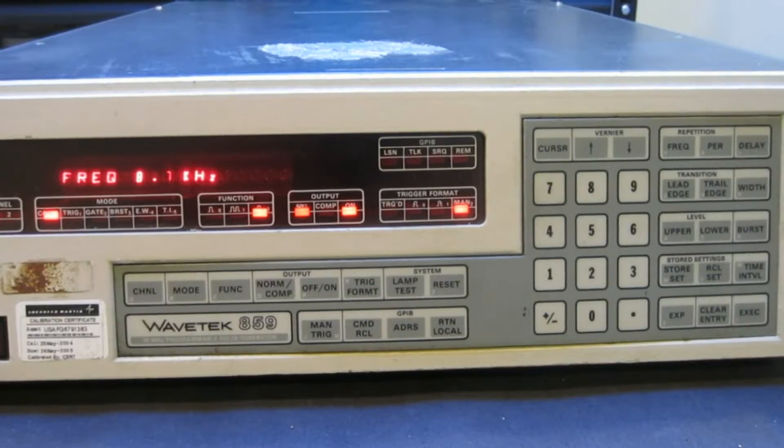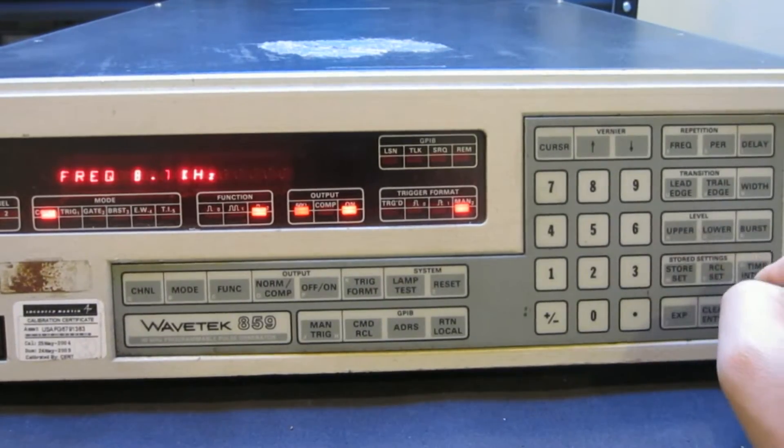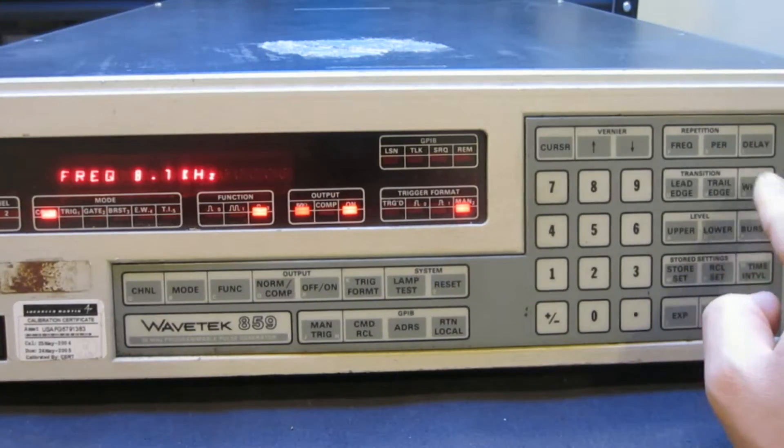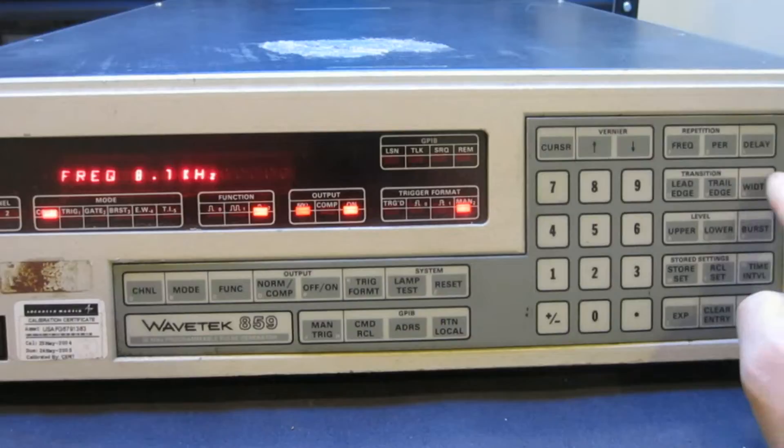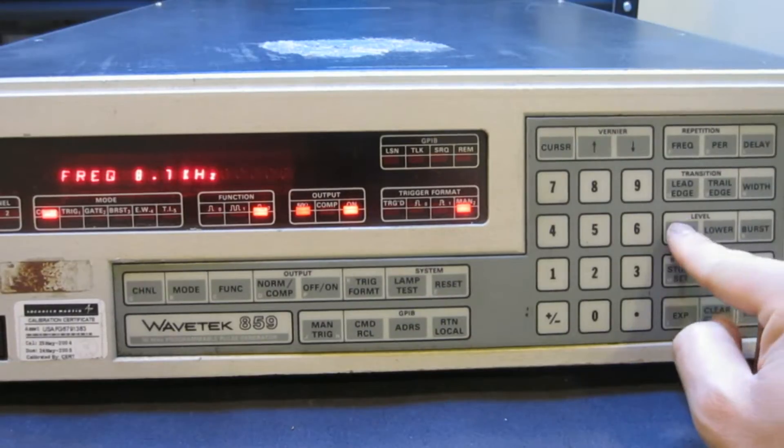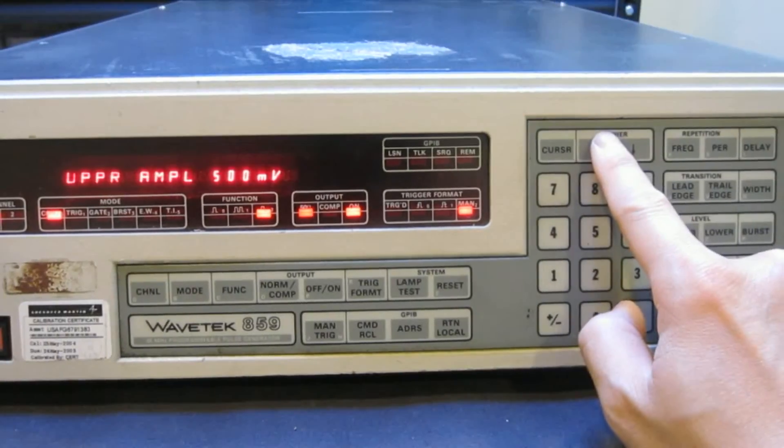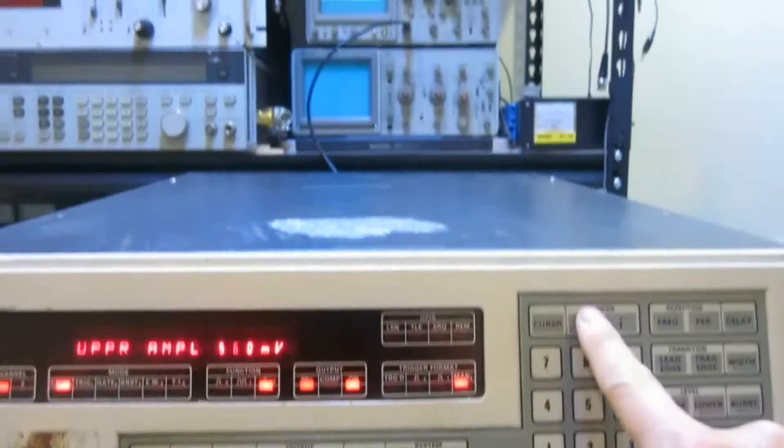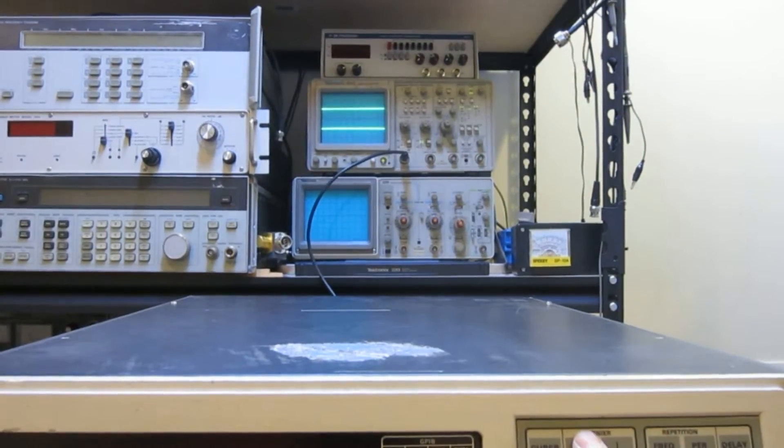We can also change the amplitude of the output signal. The amplitude should be the upper level. Right now set to 500 millivolts. I can increase this by 10 millivolts, and if you look at it carefully, let me zoom it in.